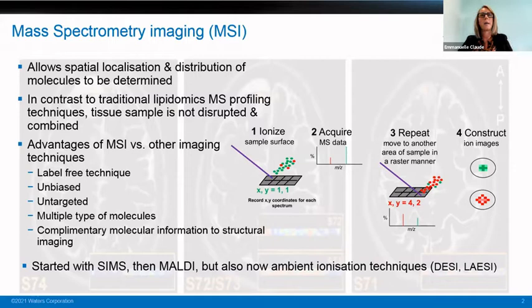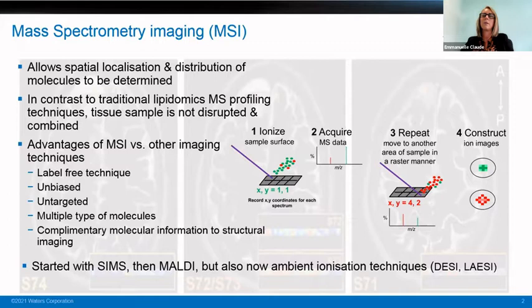Mass spec imaging started with secondary ionization mass spec techniques, or SIMS, back in 1980. But really, it's with MALDI that this technique has been truly expanded within the mass spec community. And within the last 10–15 years, ambient ionization techniques such as DESI have also been implemented for mass spec imaging.